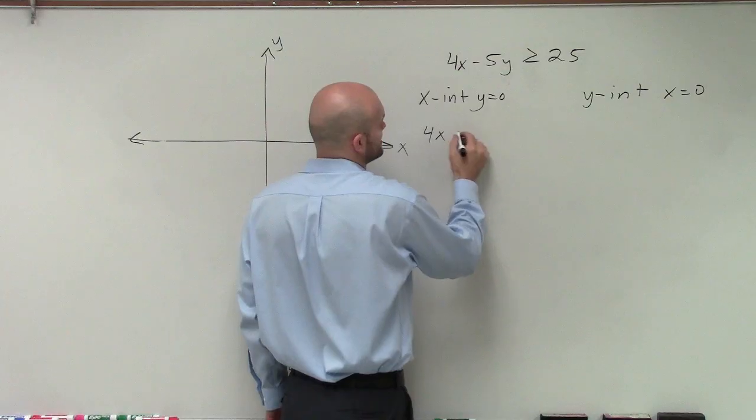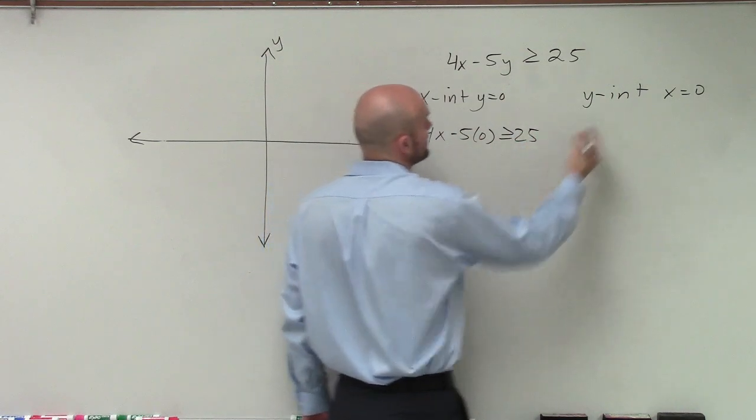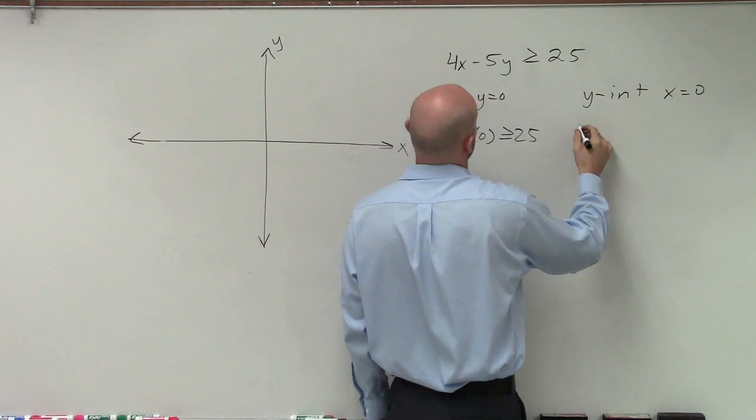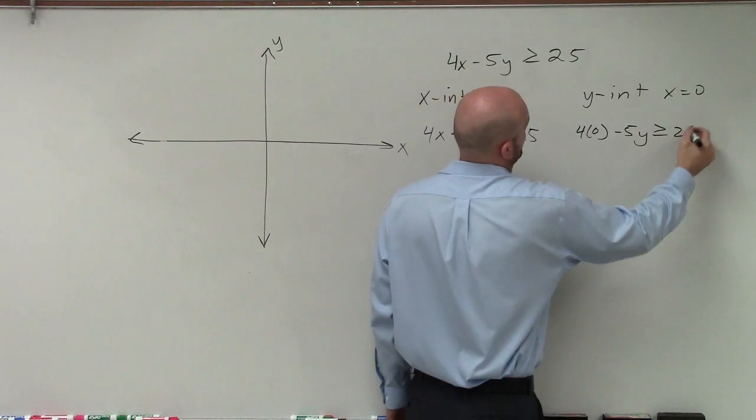So when y equals 0, I have 4x minus 5 times 0 is greater than or equal to 25. And for the y-intercept, I have 4 times 0 minus 5y is greater than or equal to 25.